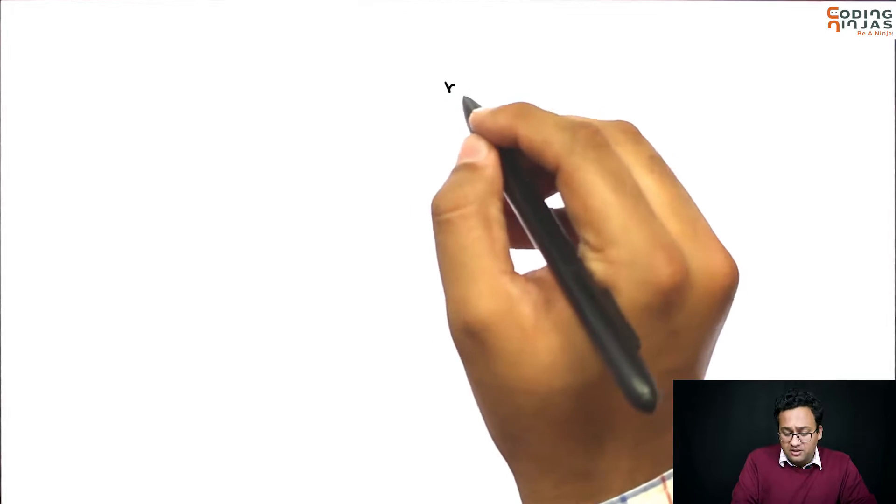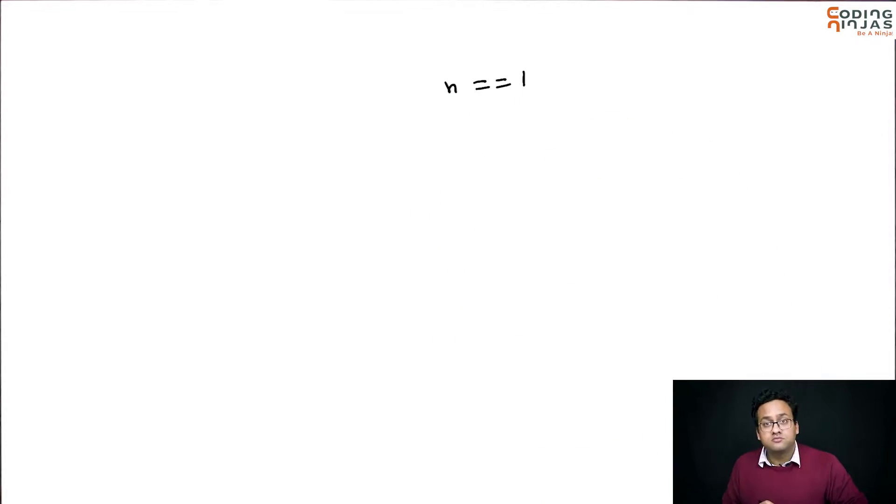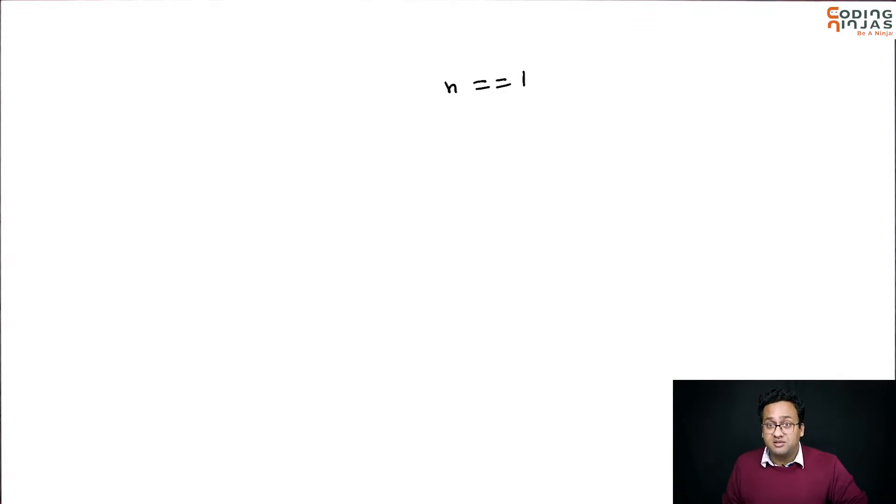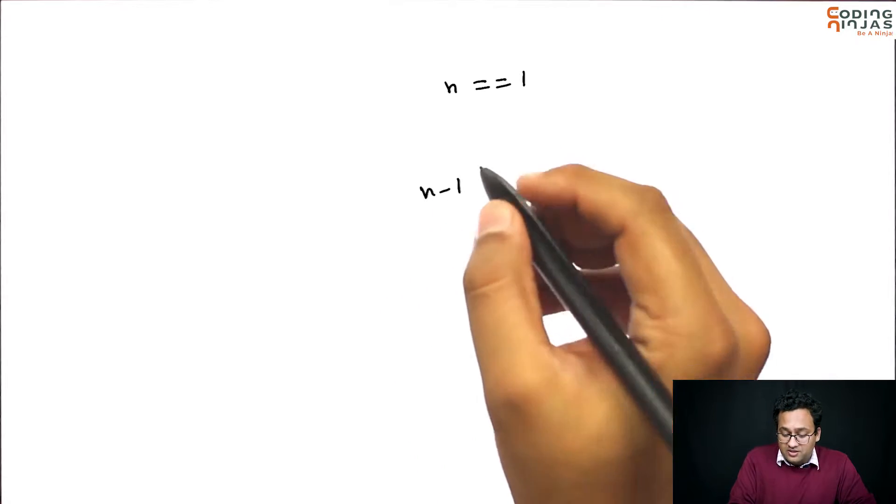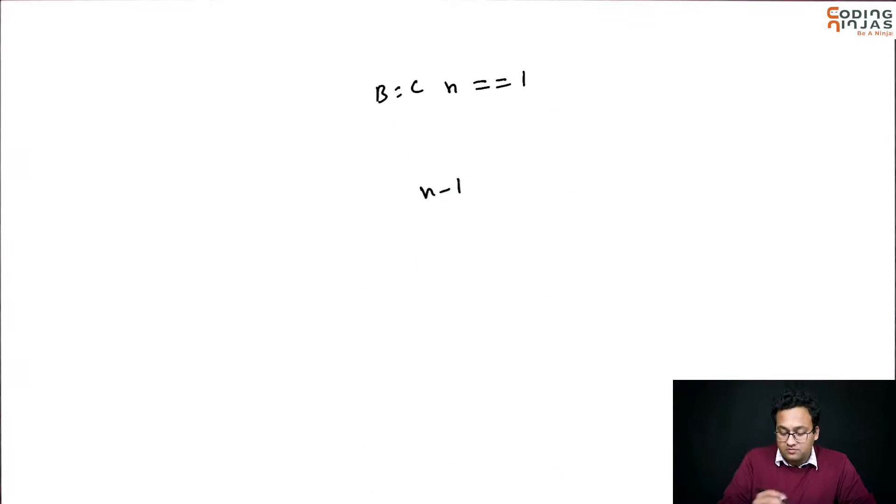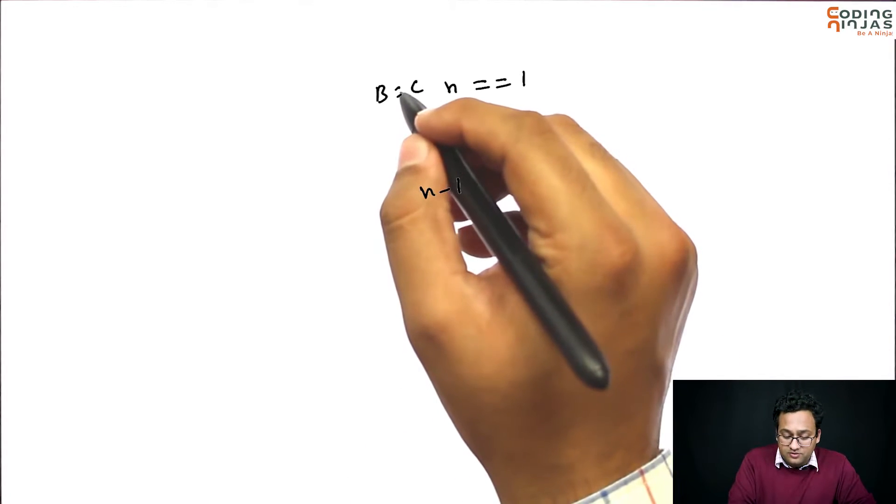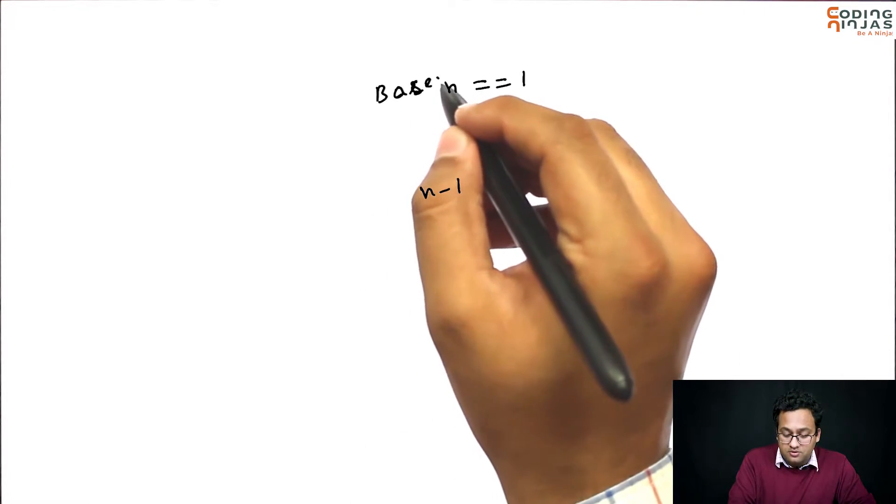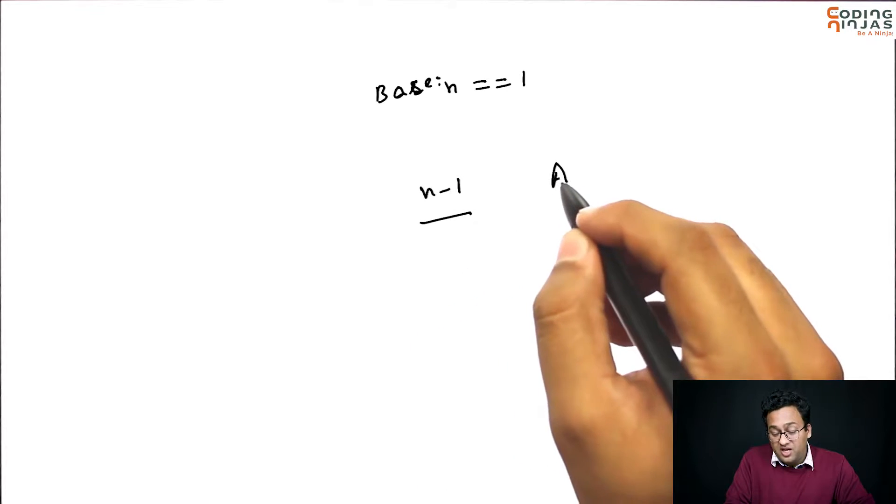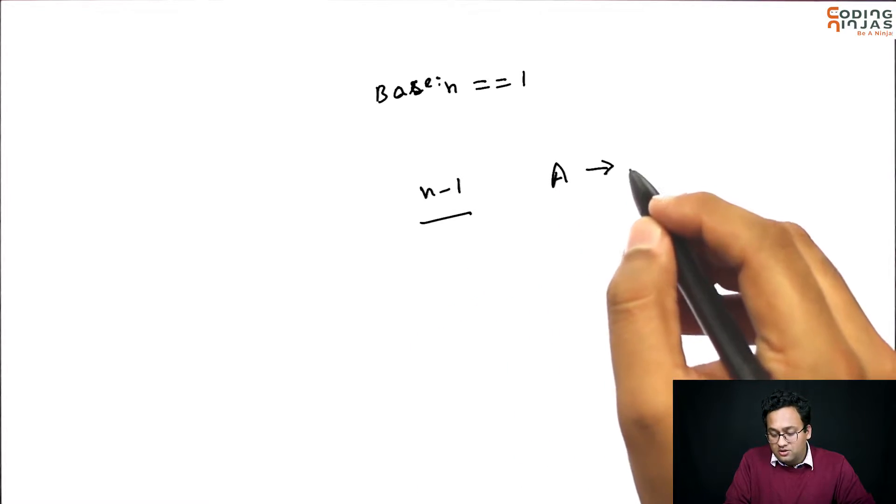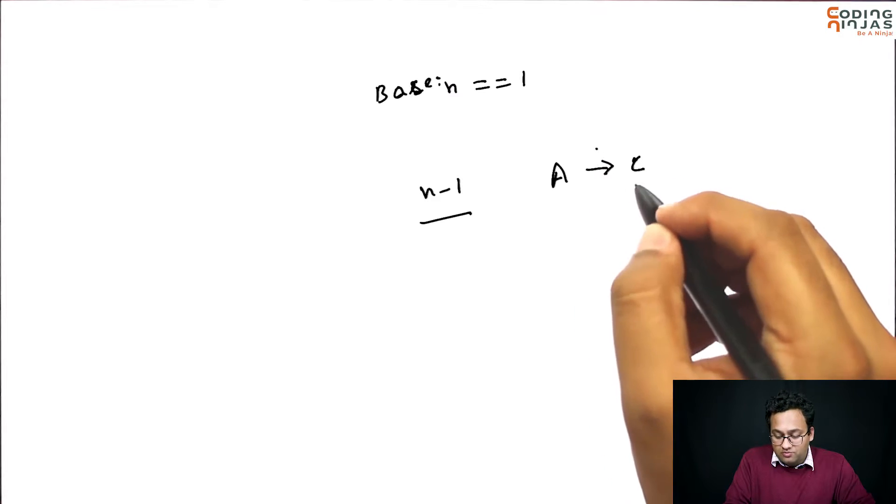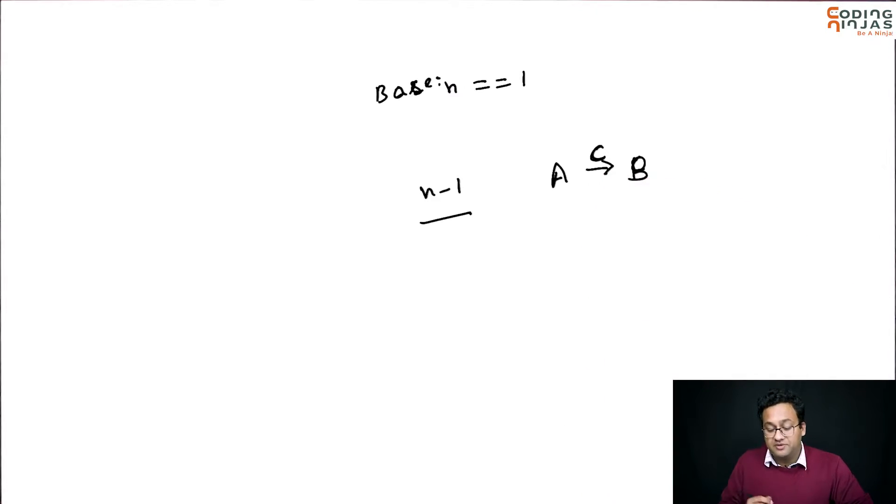Base case. If n is equal to 1, I will just simply print move the nth disk from A to C. As simple as that. Now, the next step. Move. This is base case.